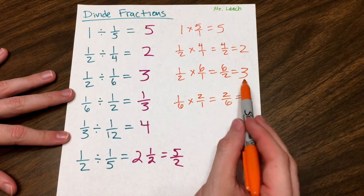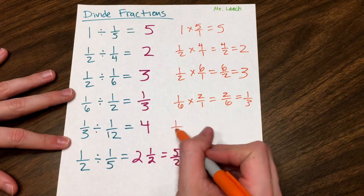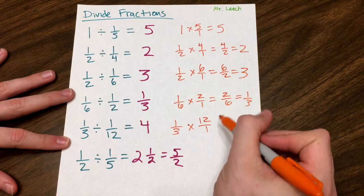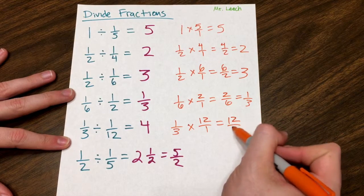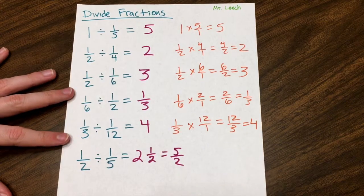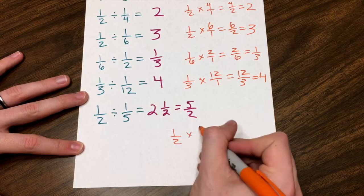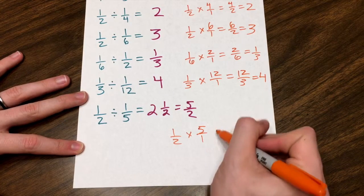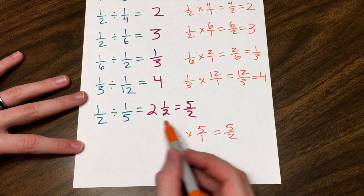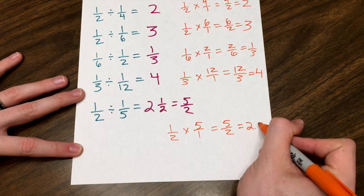Notice, again, division is not commutative. One-third times twelve over one is twelve-thirds, which reduces to four. And lastly, one-half times five over one, which is five halves, or two and one-half. You can also write it as a decimal as two-point-five.